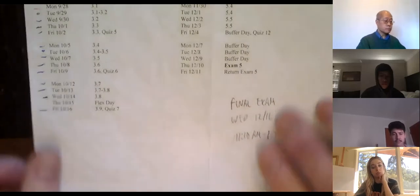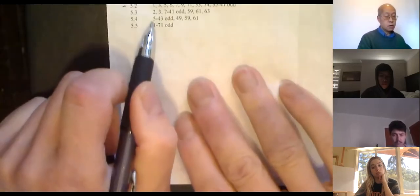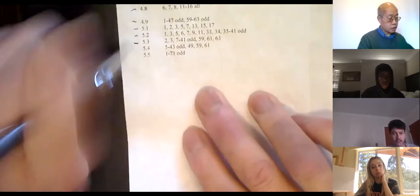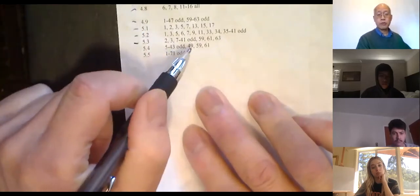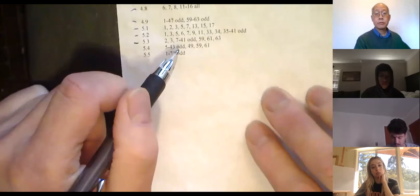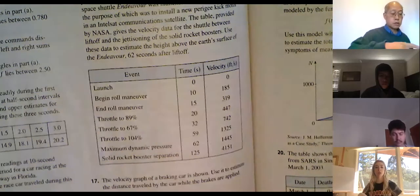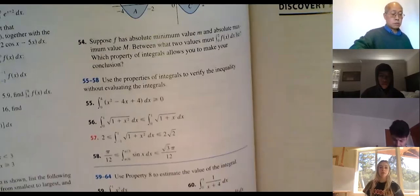Alright, go ahead and get started. I was going to do problems two and three — just two and three. I'll save 7 to 41 for when we come back from Thanksgiving. So we have this weird area function as part of the Fundamental Theorem of Calculus Part 1.